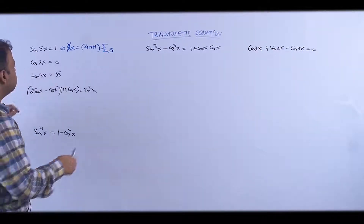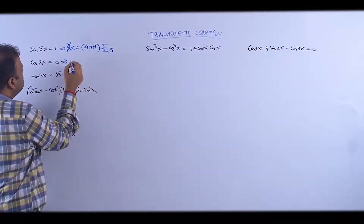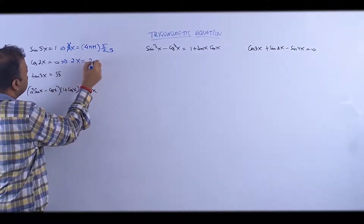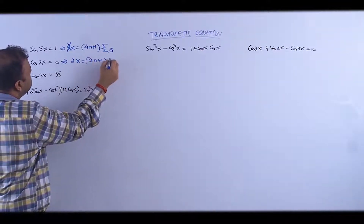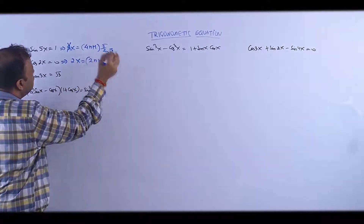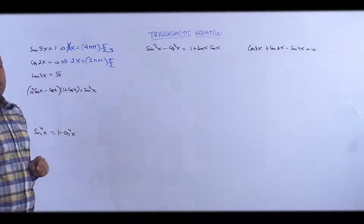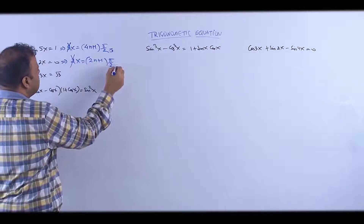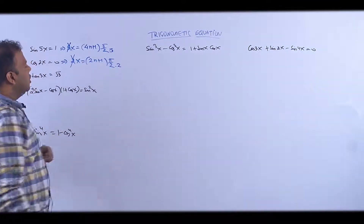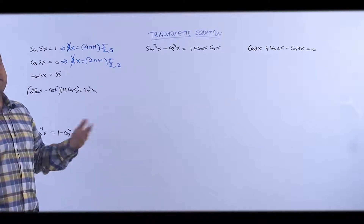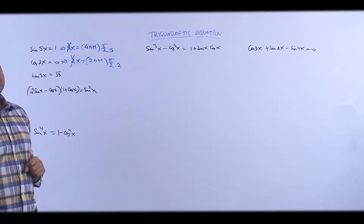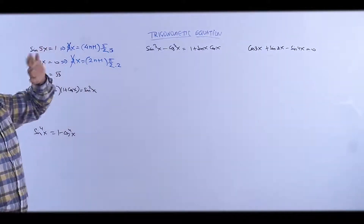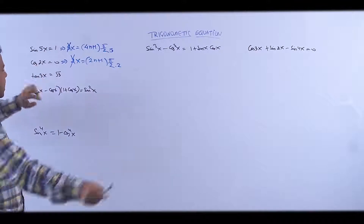Second question: cos(2x) = 0. We know that cos = 0 at odd multiples of π/2. So x ka value ho jayega (2n+1)π/4. Agar multiple mein x ki jagah kuch aur hai to bhi same approach chalta hai.